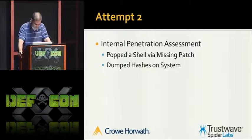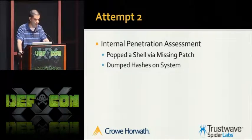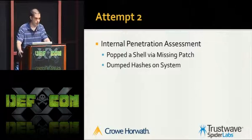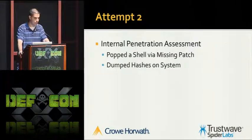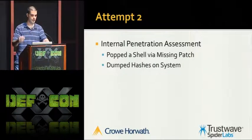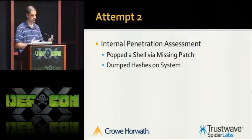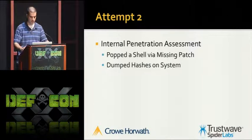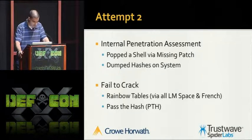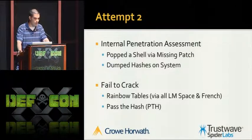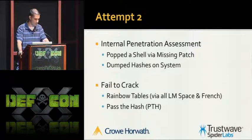Fast forward to my next pen test. We're on a network for a week. I pop a shell on a system missing a patch, get a Meterpreter session. I dump the hashes using Metasploit's HashDump script, which uses registry reading. I notice I have an LM and NTLM hash again. Try to crack the LM - can't. Since I'm still on the system, I try passing the hash back to the original system. Doesn't work either. So I decide to fight AV, kill it, and use my old standby PWDump 6 - inject into memory and see what happens.